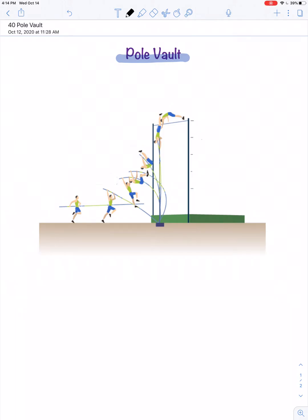The pole vault is a great demonstration in the law of conservation of energy. As you know, a pole vaulter starts out by running with some velocity, carrying their pole with them.